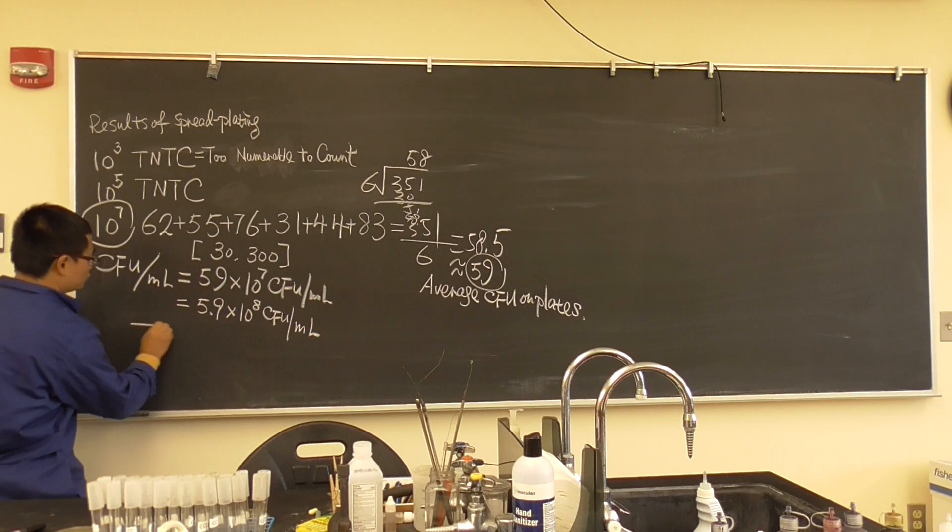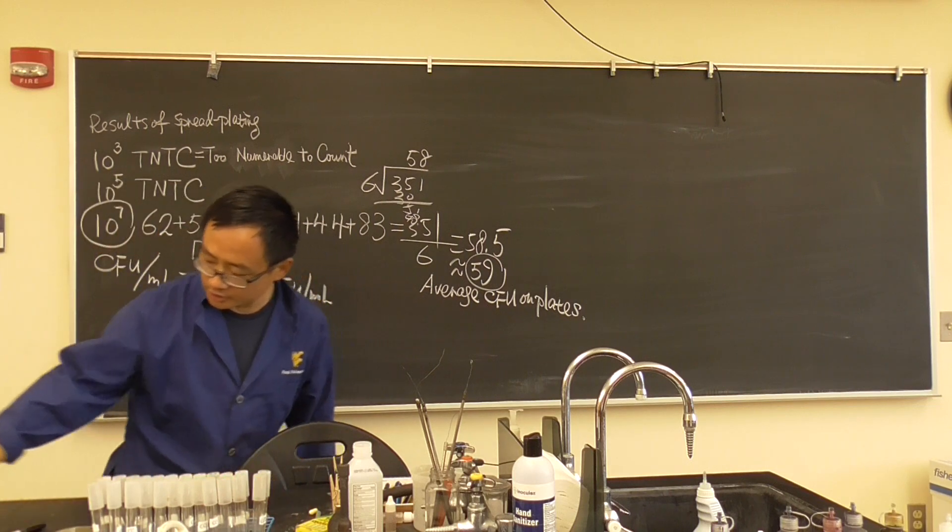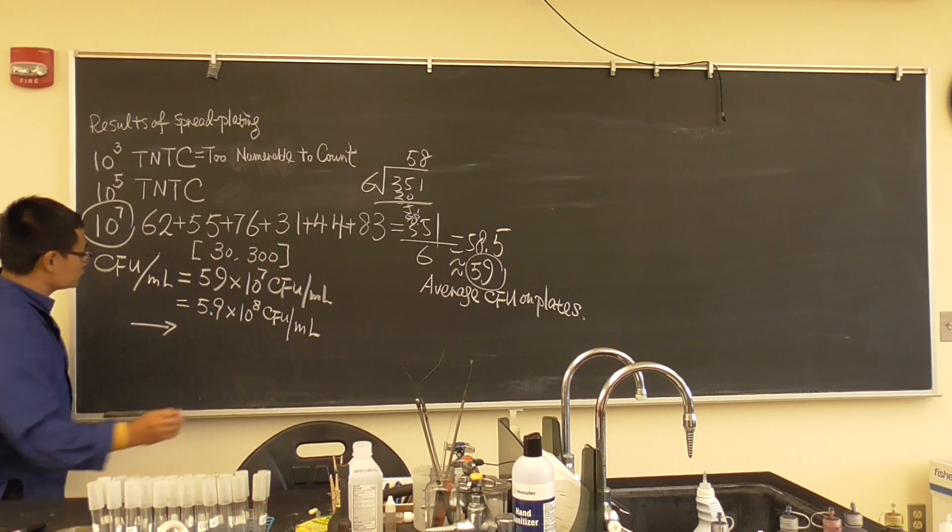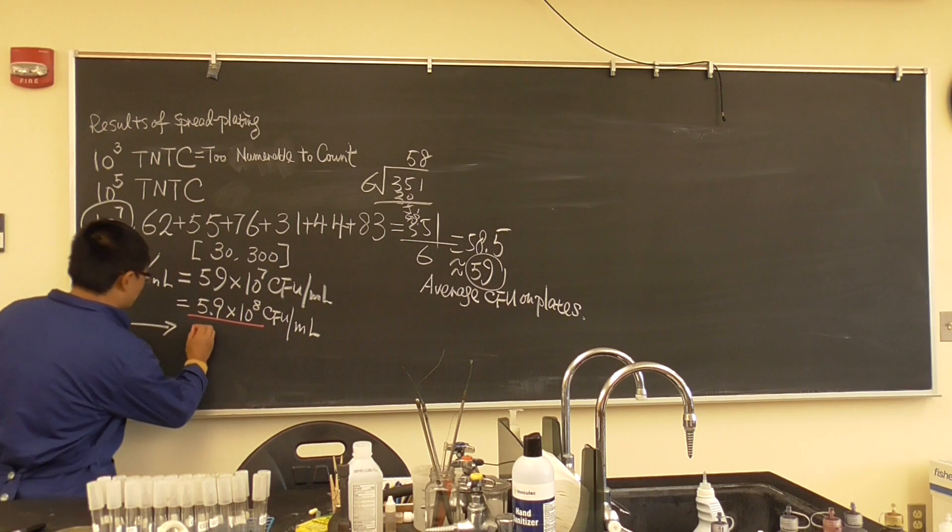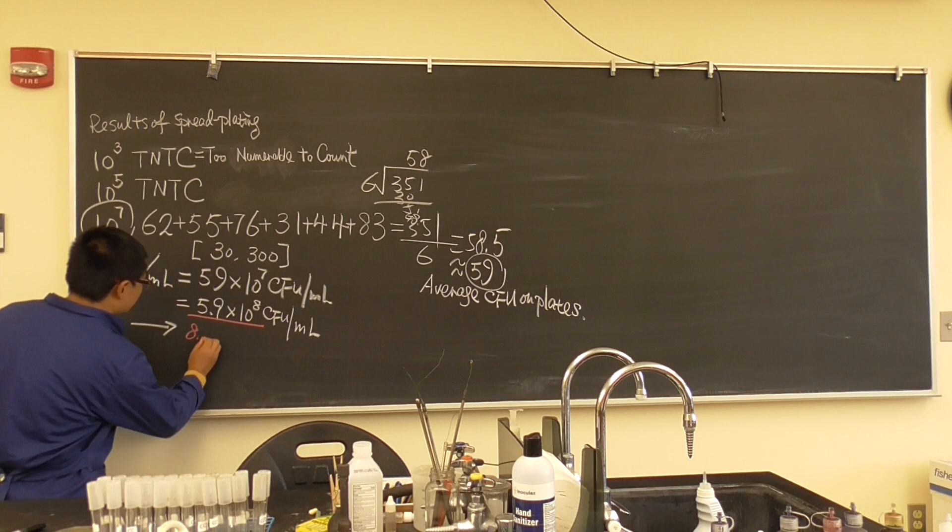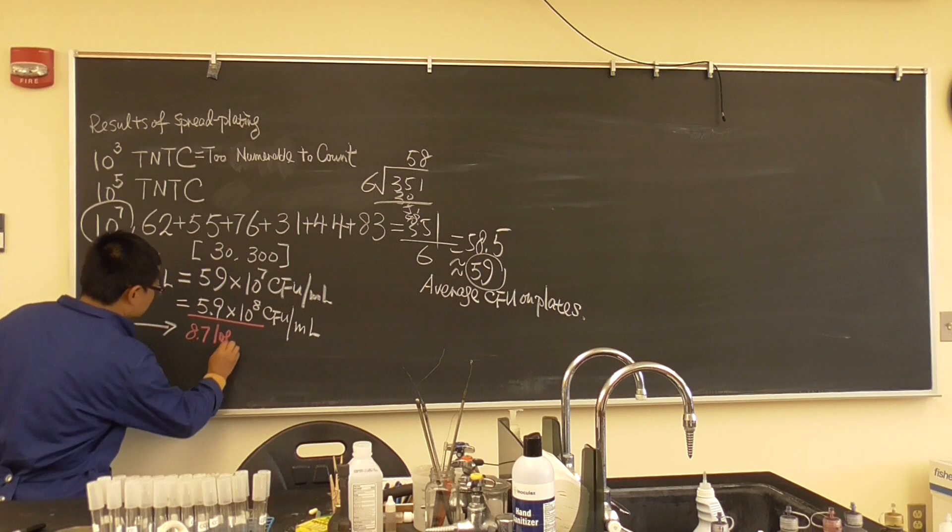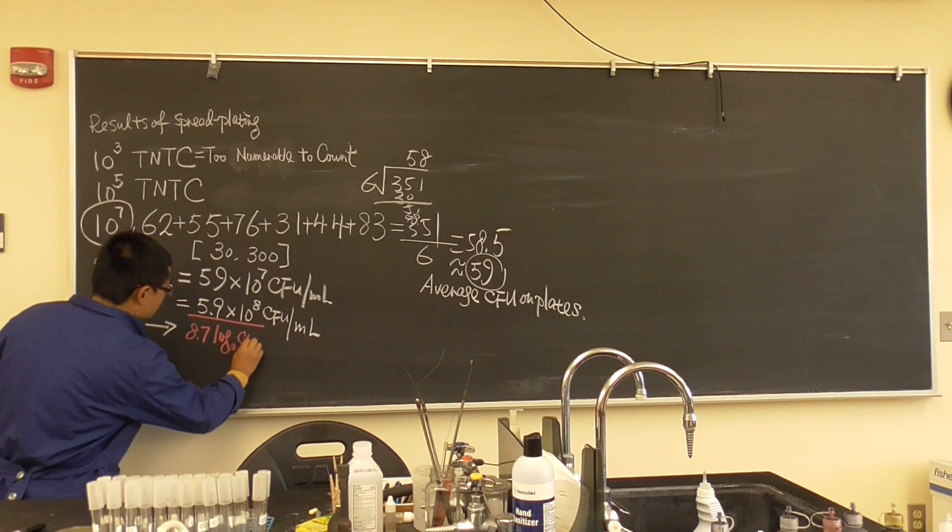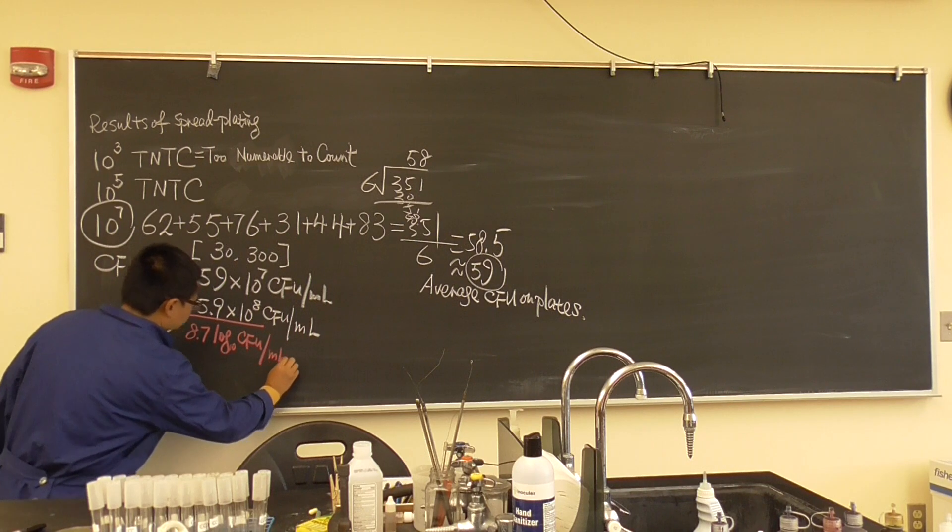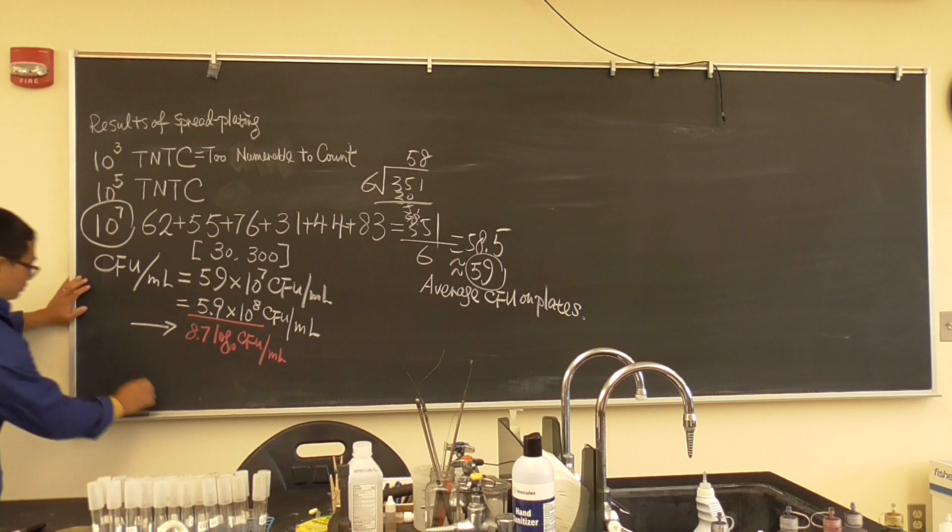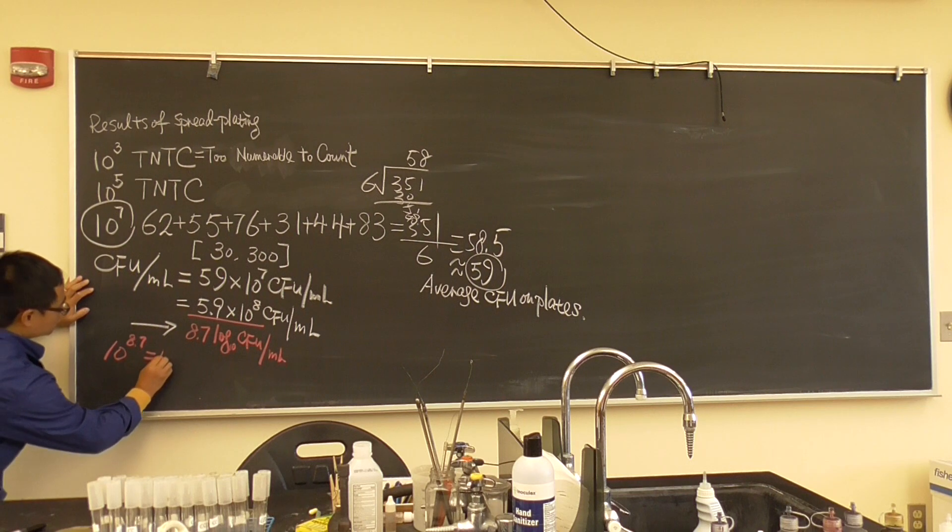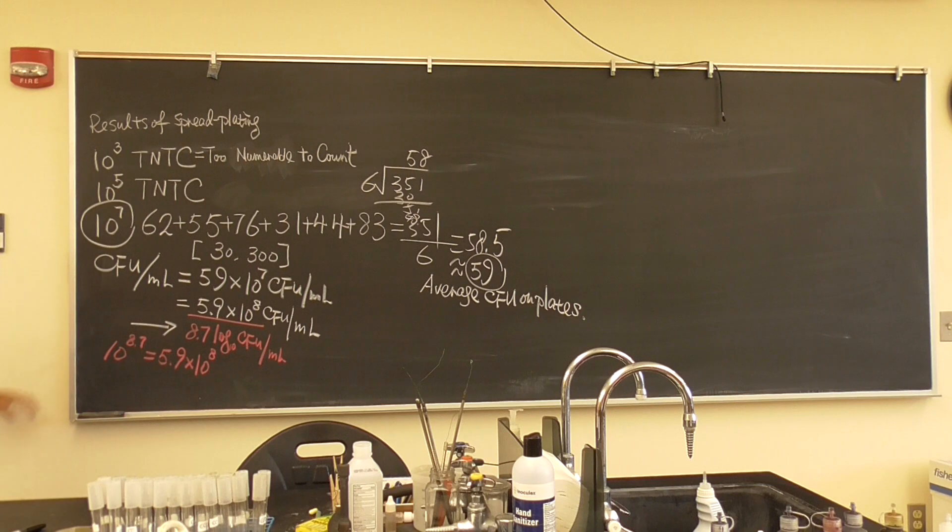Then we need to transfer one thing. This number needs to transfer to log 10. So how many? Approximately 8.7 log 10 CFU per ml. That means approximately 10 times 8.7 equals 5.9 multiplied by 10 to the 8 CFU per ml. You can use a calculator. It's close.